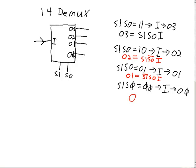And finally, output zero will be a one only if S1 is a zero, S0 is a zero, and I is a one. So if S1 is a zero, not S1 will be a one. If S0 is a zero, not S0 will be a one. And of course, if I is a one, then I is a one. One and one and one is one, makes output zero a one. In any other case, output zero will be a zero.